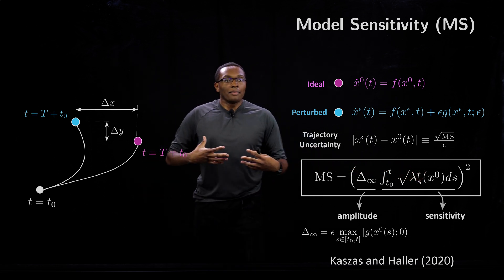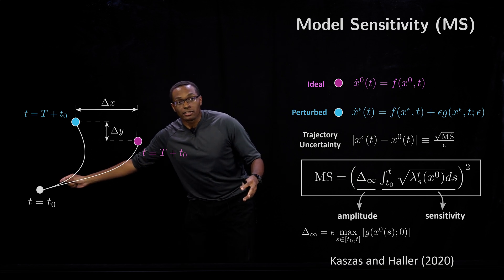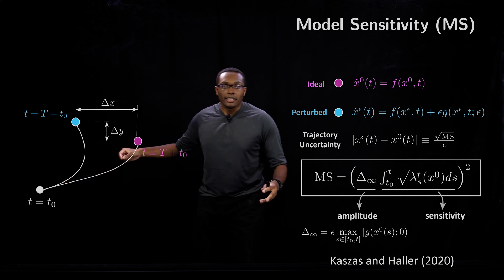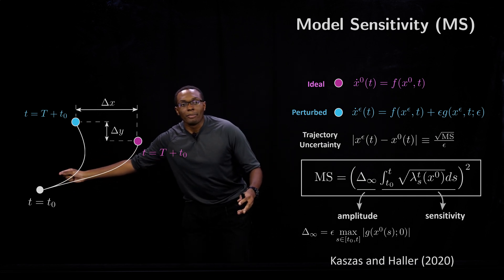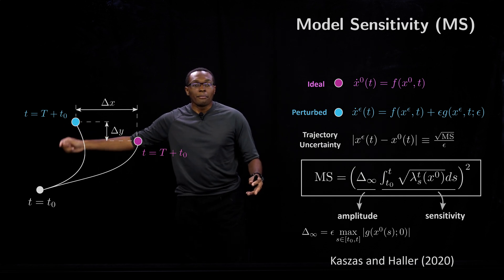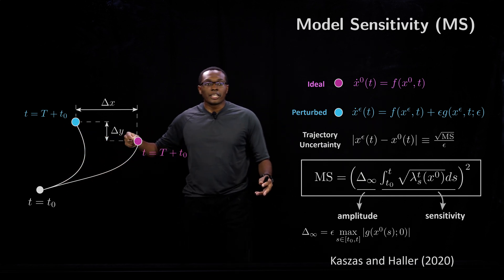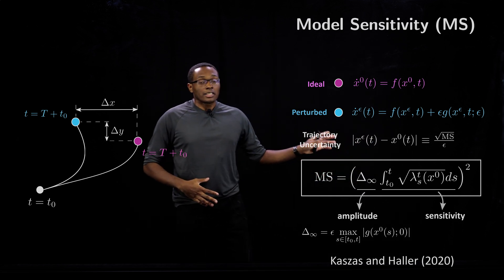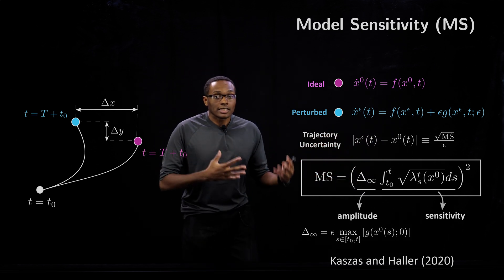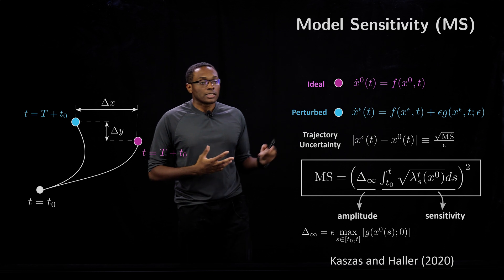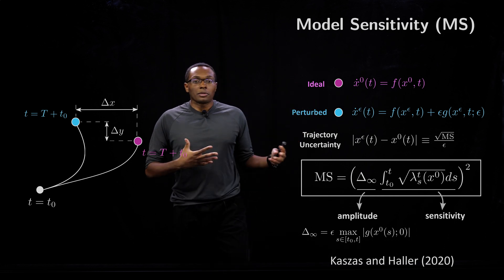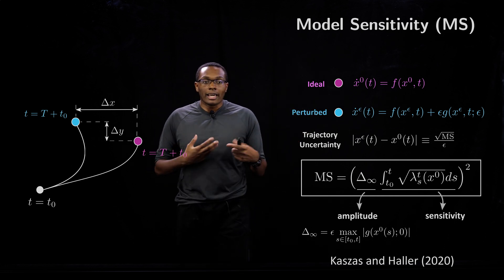This expression really only cares about the ideal trajectory. It's not concerned about the perturbed trajectory, but it aims to approximate this perturbed trajectory using the mode sensitivity expressions. This is mode sensitivity, and we can compute this everywhere in the flow, similarly to how we computed the FTLE field.